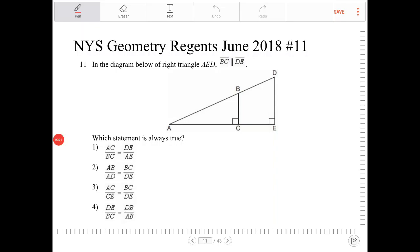In a diagram below of right triangle AED, BC is parallel to DE. Which statement is always true?